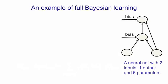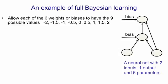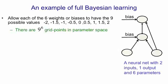So here's a picture of full Bayesian learning. We have a little net here that has four weights and two biases. If we allowed nine possible values for each of those weights and biases there'd be nine to the six grid points in the parameter space. It's a big number but we can cope with it.